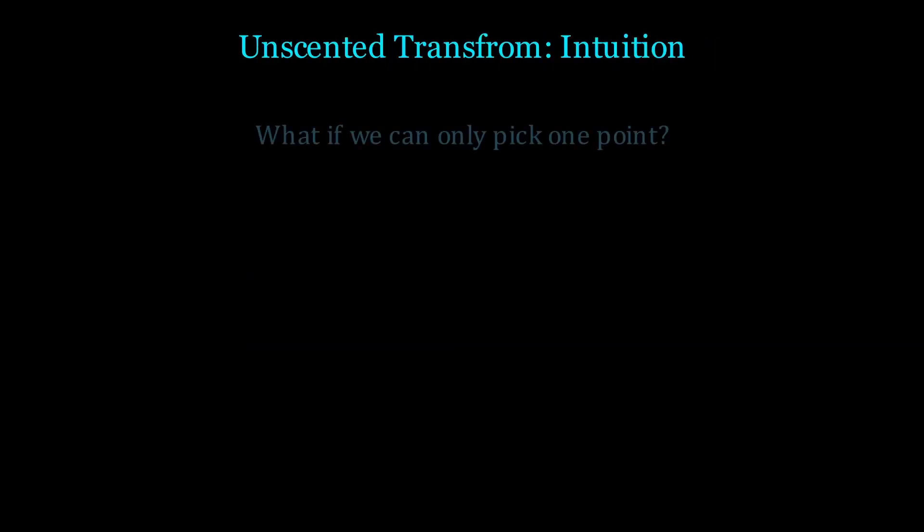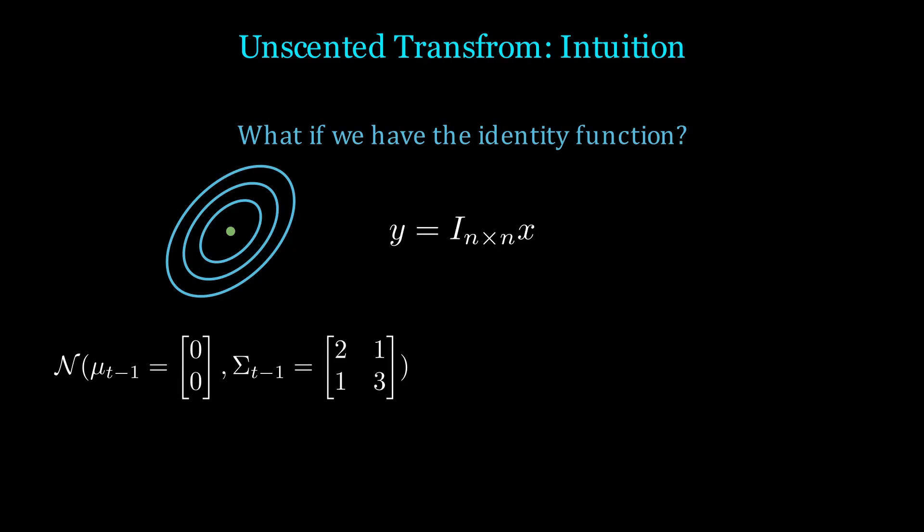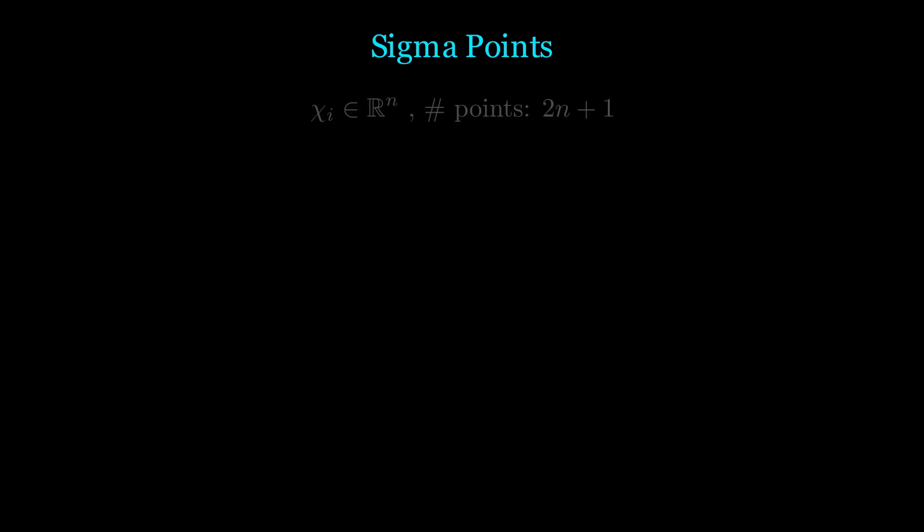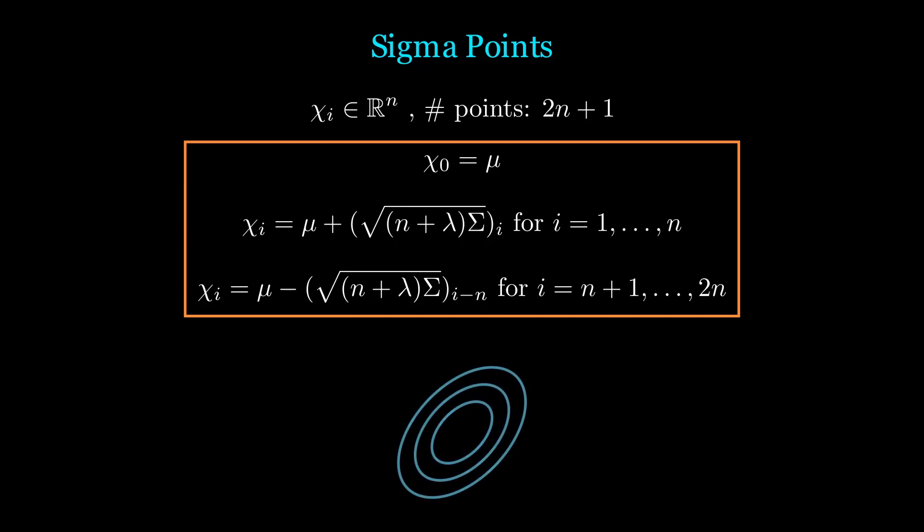Let's consider if we can only pick one point. The obvious choice is the mean. Then, let's consider if our transform function is the identity function. If we just have a single point, the covariance is zero. So what if we pick points around the mean to recover the covariance? Note that these points that we are picking are called sigma points. So the paper picks sigma points like this. We choose 2n plus 1 points where n is the dimension of our state. Point 0 is going to be our mean, and points 1 to 2n will be chosen symmetrically around our mean according to these formulas.